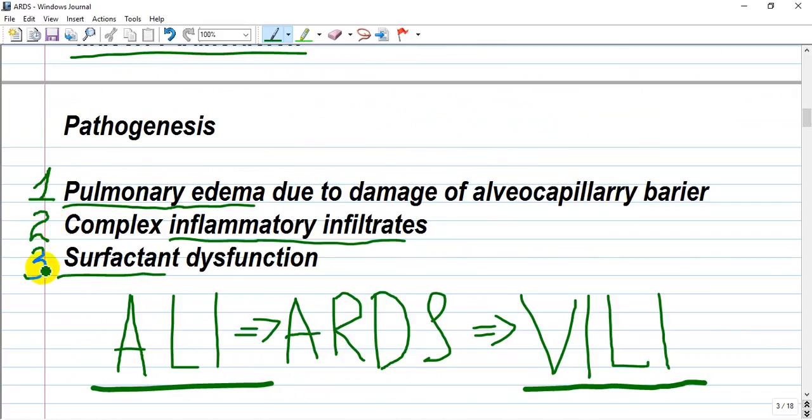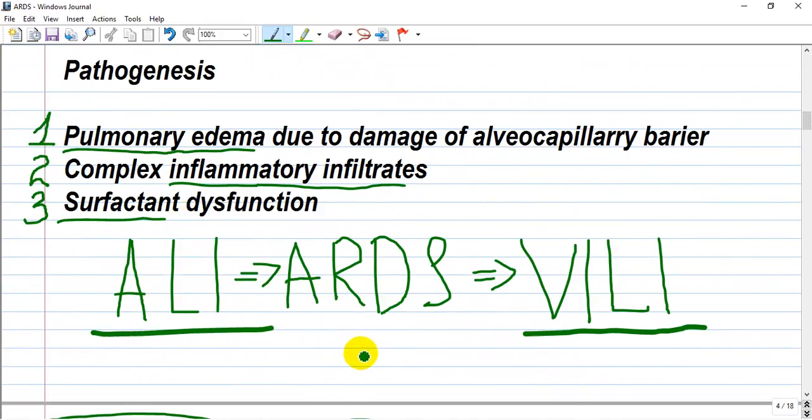By pathogenesis, we have three components: edema, inflammation, and surfactant. Pulmonary damage of the alveolar-capillary barrier, complex inflammatory infiltrates, and surfactant dysfunction. So patients develop acute lung injury following ARDS or acute respiratory distress syndrome. These patients are very often connected to mechanical ventilation and they are set at high inspiratory pressure like 25, 26, or more. And patients, sooner than one day or more or less, will develop ventilator-induced lung injury.